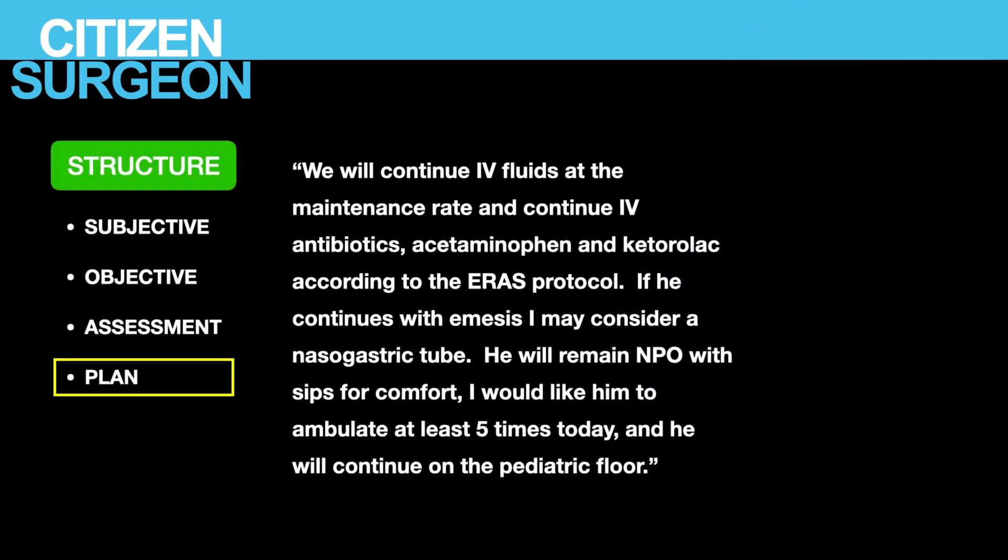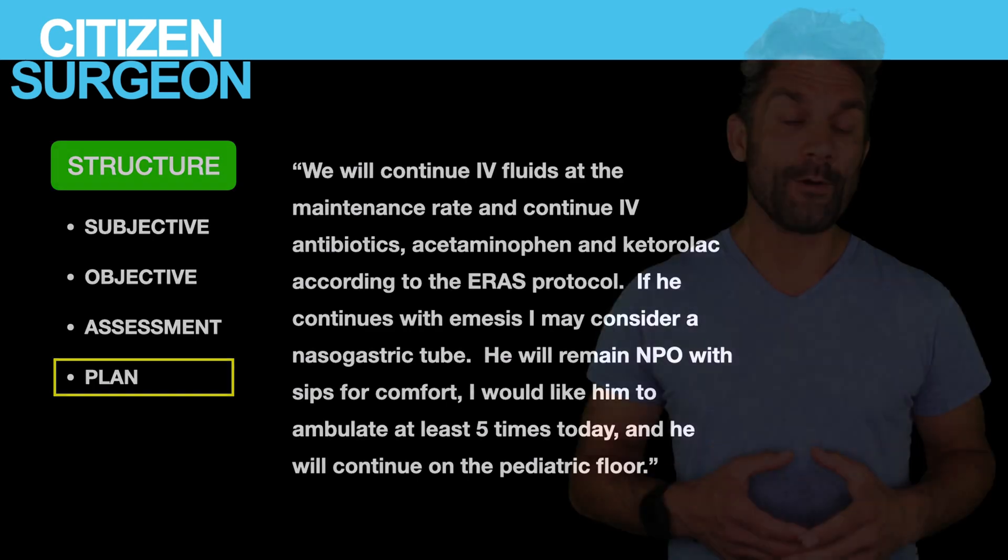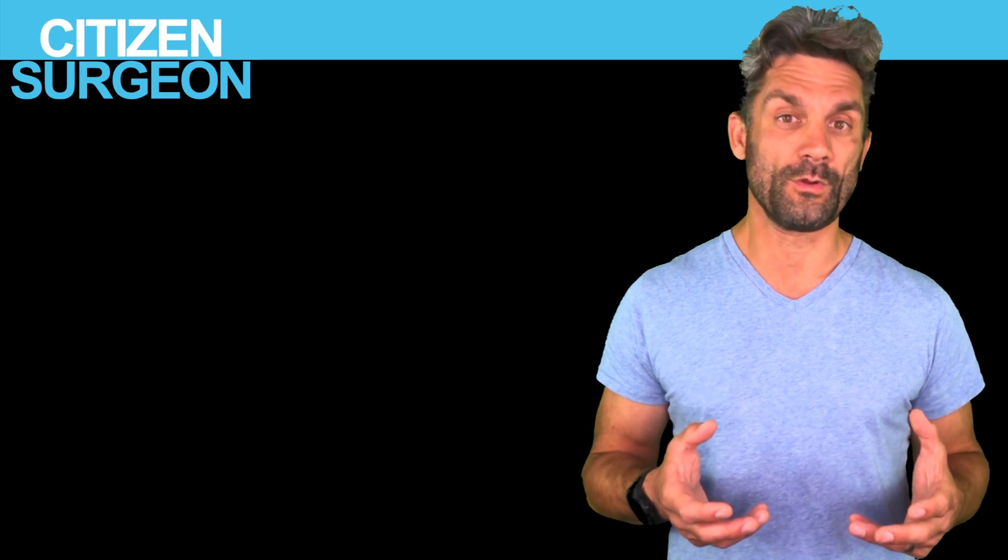Now let's take Jason the seven-year-old who's post-op day one from a lap appy for complicated appendicitis. My plan might sound something like this: we will continue IV fluids at the maintenance rate and IV antibiotics. I want to continue acetaminophen and Ketorolac per the ERAS protocol. If he continues with emesis, I may consider a nasogastric tube. He will remain NPO with sips for comfort due to his abdominal distension. I would like him to ambulate at least five times today, and he'll continue as an inpatient on the pediatric floor.